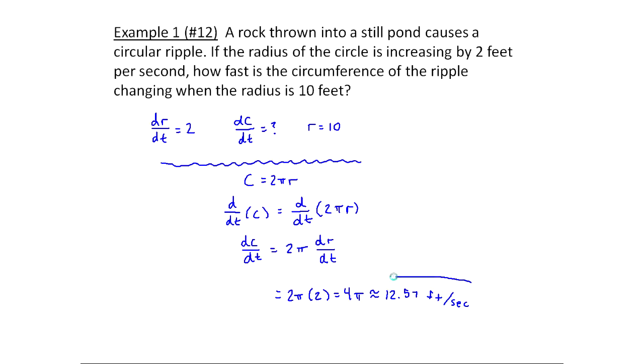So as this circle, this ripple moves away from the rock in the pond, of course the radius is getting bigger and bigger because the ripple's getting bigger, but circumference around the circle's also getting bigger. And this is the rate of change of that circumference at a particular moment in time.